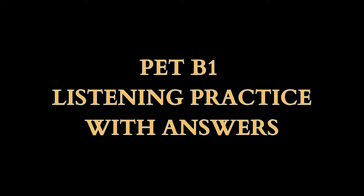Now open your question paper and look at Part 1. There are seven questions in this part. For each question, there are three pictures and a short recording. Choose the correct picture and put a tick in the box below it. Before we start, here is an example.